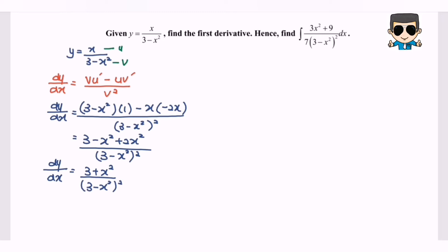For part two, we need to find the integral of (3x² + 9) / 7(3 - x²)² with respect to x. Before we begin, refer to the derivative result on the left — if we integrate that expression with respect to x on both sides.